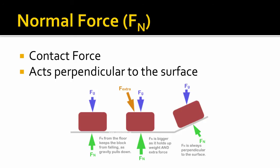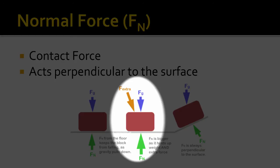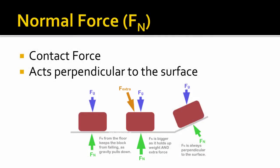A lot of times it's going to be equal to the force of gravity, but it doesn't have to be. There's going to be plenty of situations where that's not true, such as the second block, where you have an extra force pushing down along with gravity. That means the normal force is going to have to be bigger because it has to counteract both the force of gravity and that extra force.